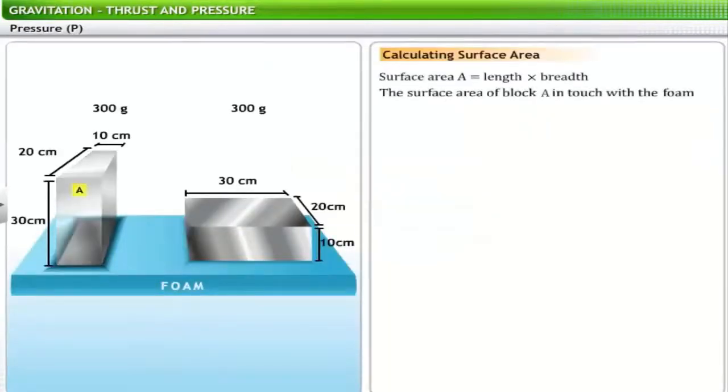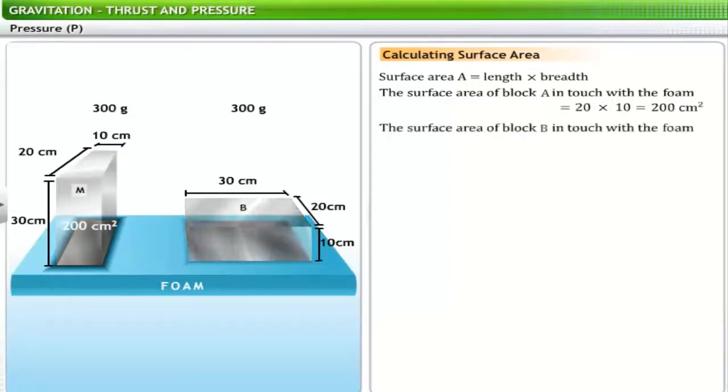The surface area of block A in touch with the foam is 200 square centimeters. On the other hand, the surface area of block B in touch with the foam is 600 square centimeters.